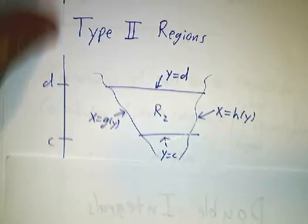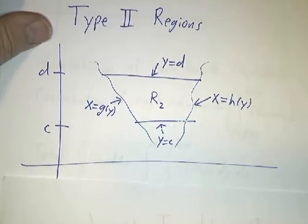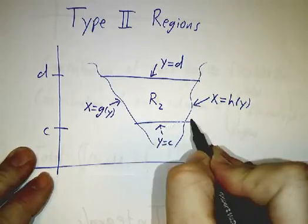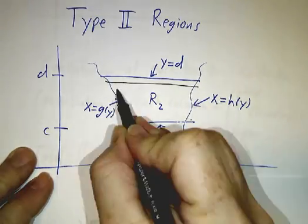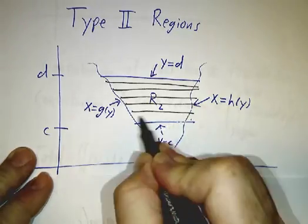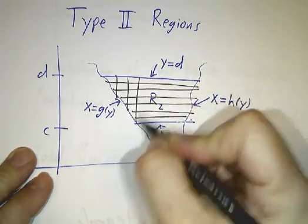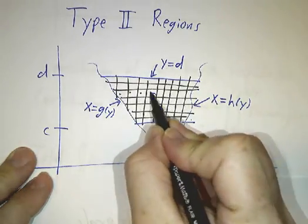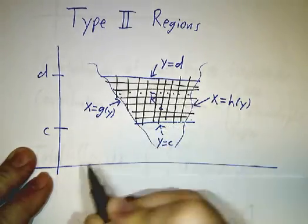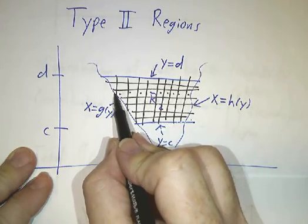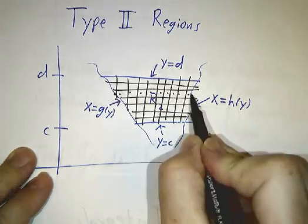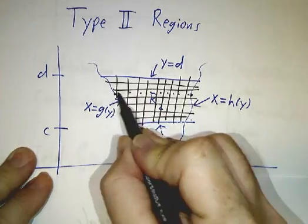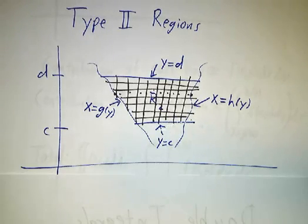For a type 2 region, it's the same thing in reverse. You're bounded by a large value of y and a small value of y, and in between you chop things into boxes and add up the boxes sideways. You go from the smallest value of x to the biggest value of x for each value of y — that gives you the contribution of each row — and then you add the rows together.